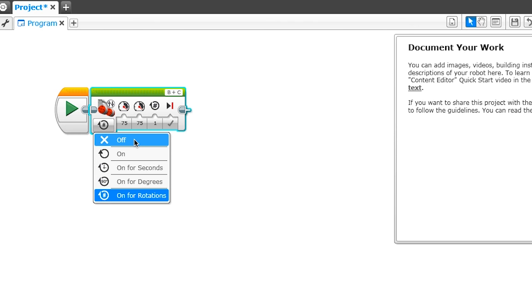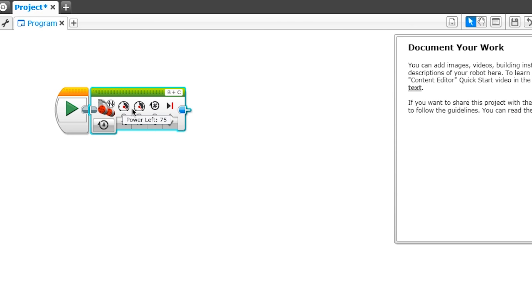The next thing you'll see is this little loop with a number sign in it. The default set for that is on for rotations. This is the duration that this drive command will last for. You'll notice a number of different options here, including off, on, on for seconds, and on for degrees. On will come into play once we start introducing sensors, and we'll skip for now. You can choose different types of durations: if you want your motor to run for a certain number of seconds, if you want the wheels to spin for a certain number of degrees, or a certain number of rotations. For now, I'm going to select rotations.